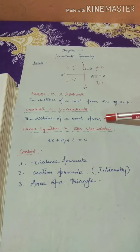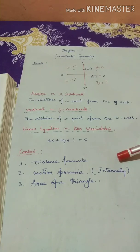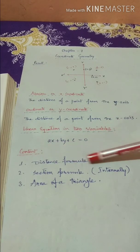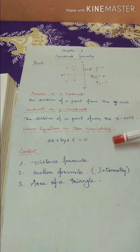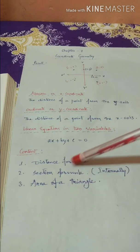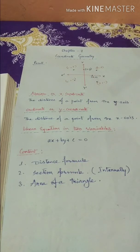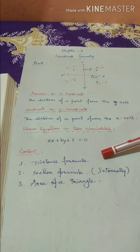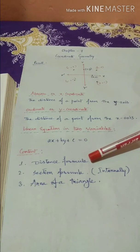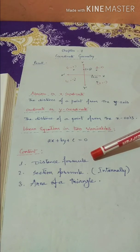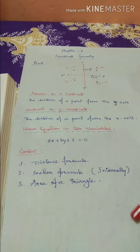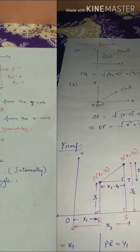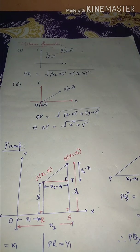Now, in this coordinate geometry chapter, we have three main topics to discuss. First is the distance formula, second is the section formula — both internally — and the last one is the area of a triangle. If we cover these three topics, our coordinate geometry chapter is complete. Today we start with the first topic: the distance formula.